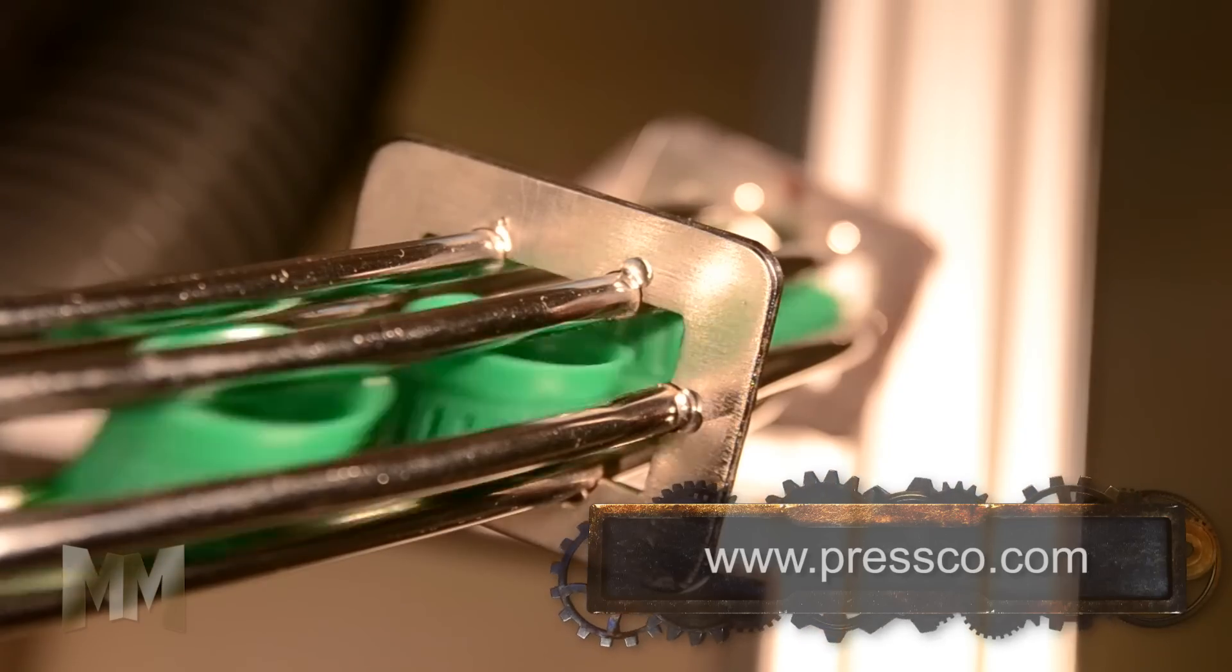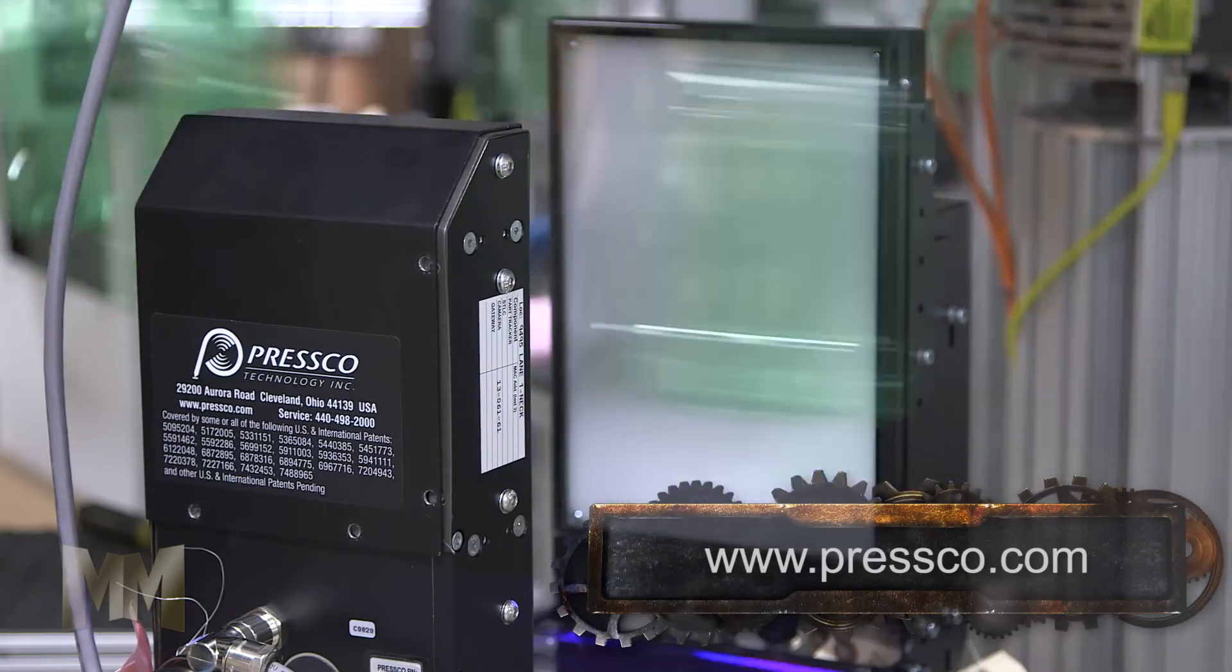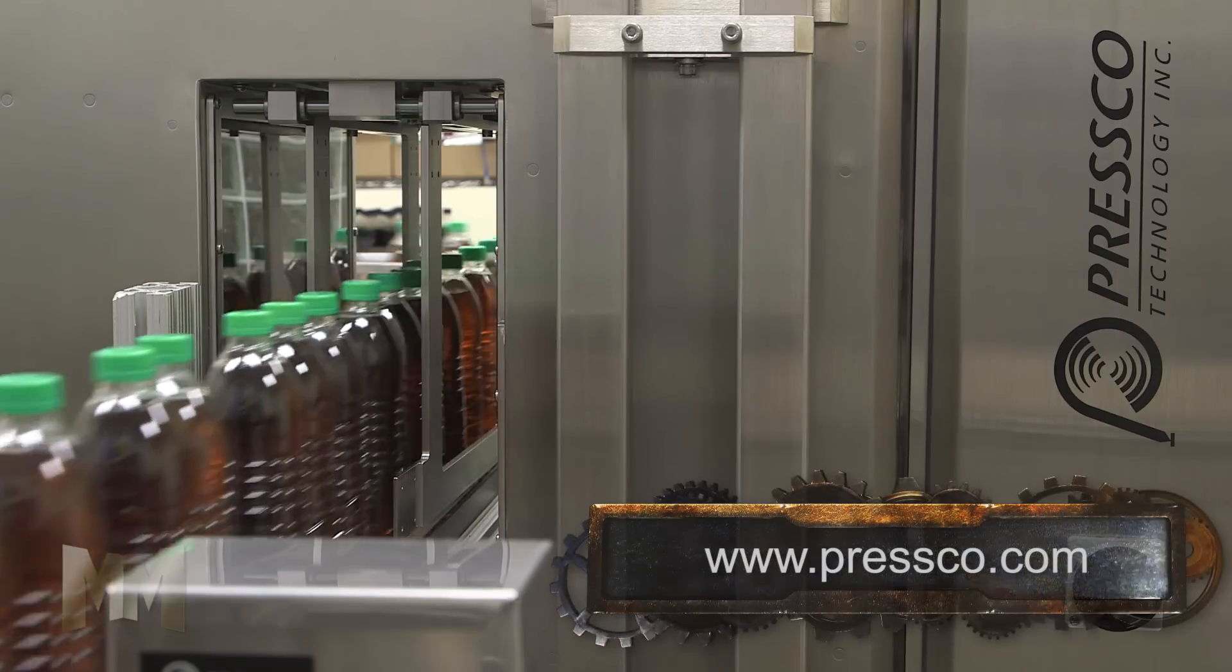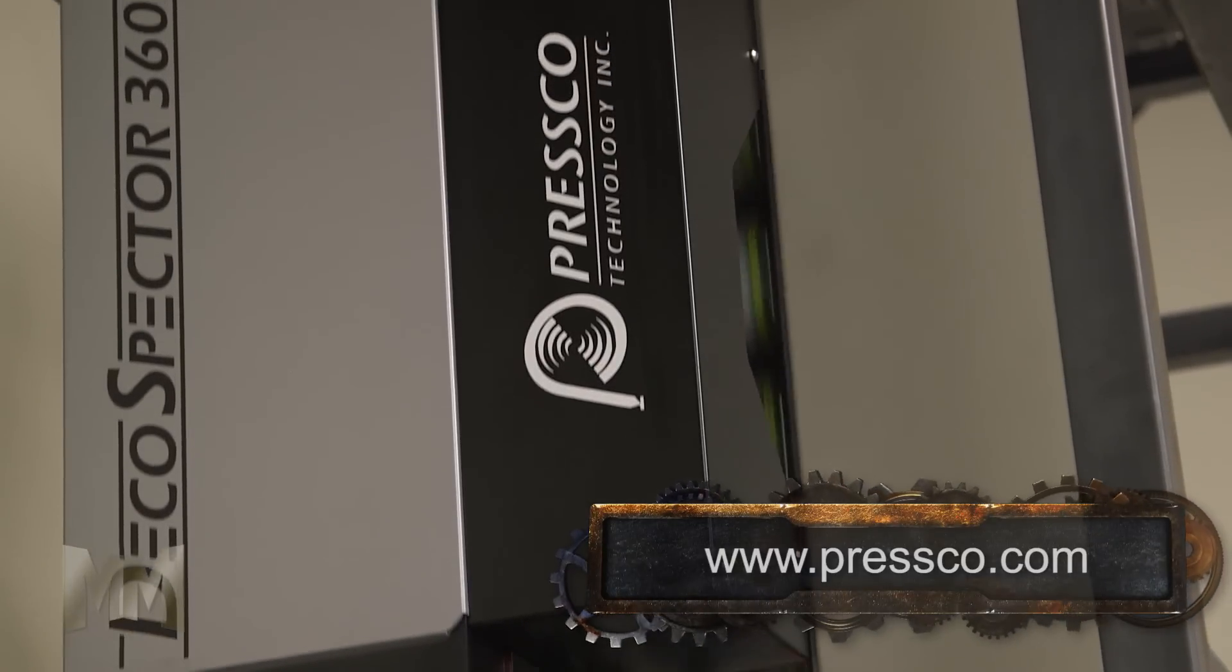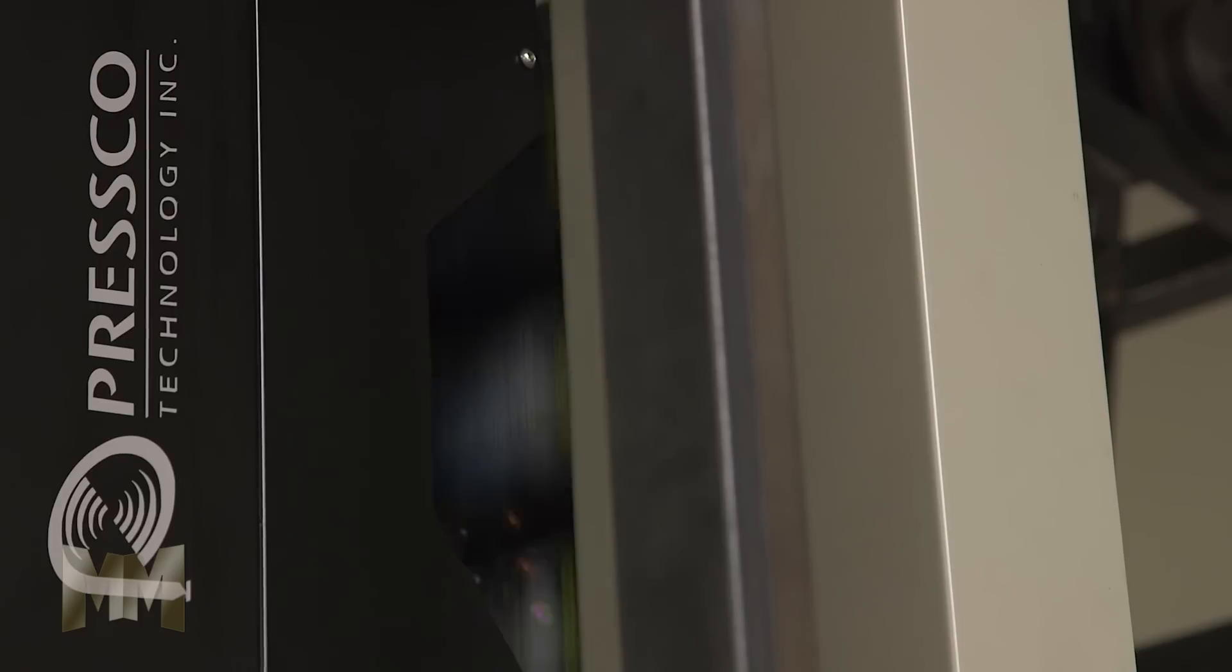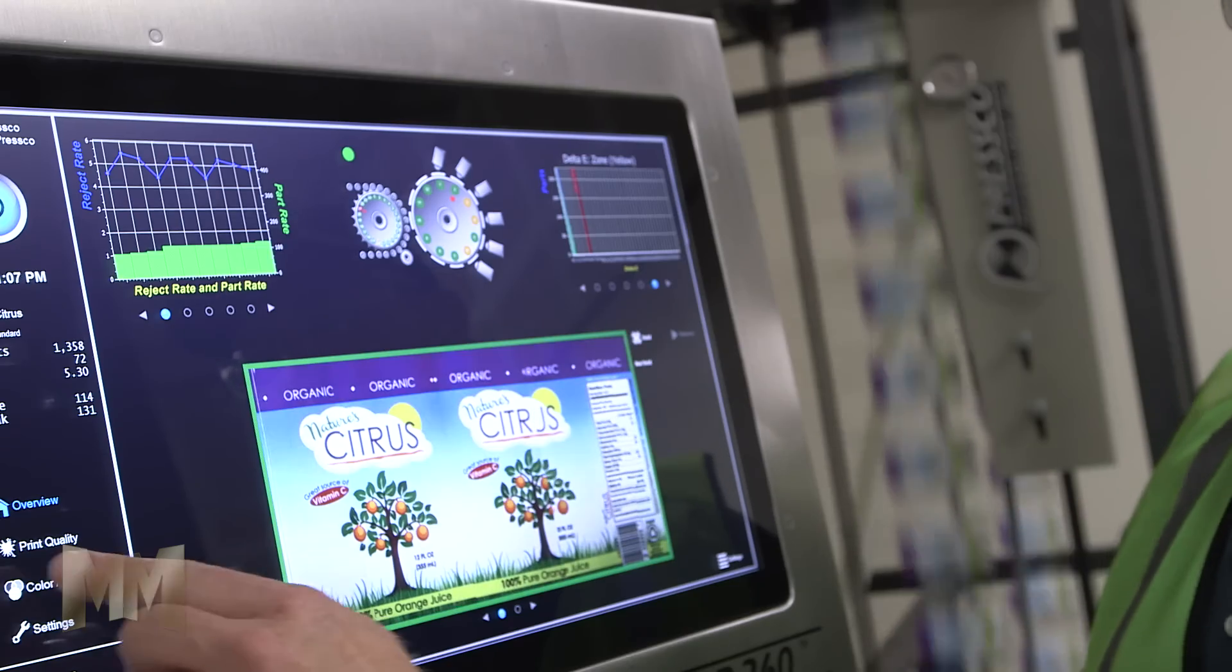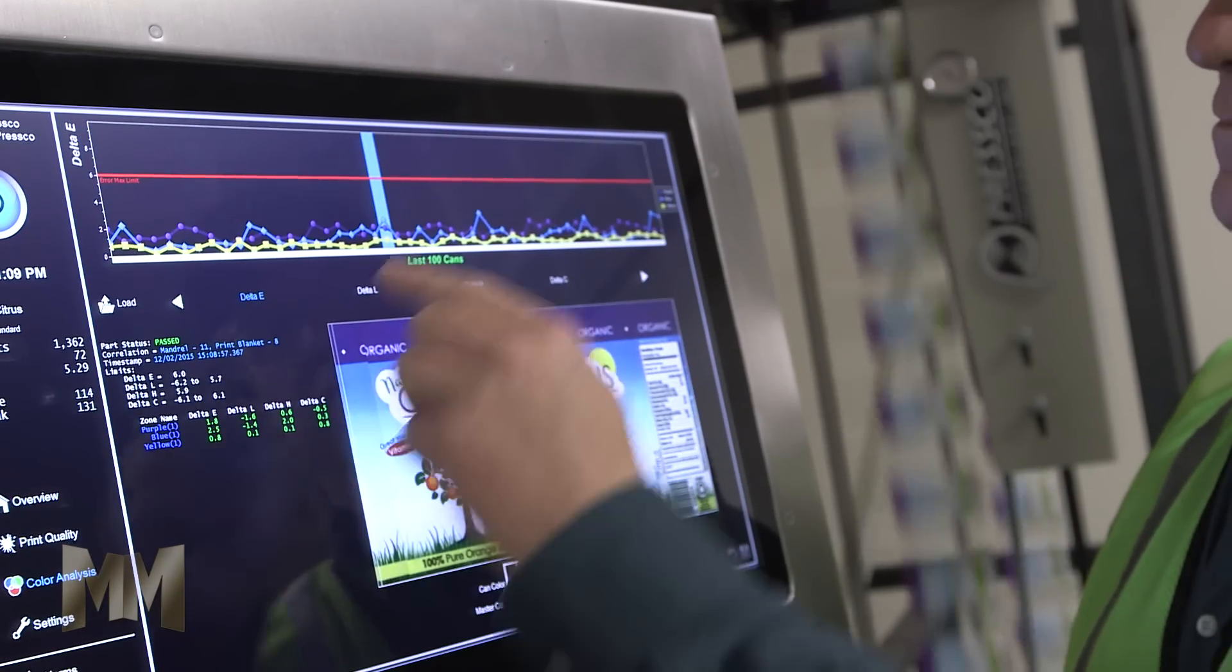For vertically integrated filling companies, Presco offers an end-to-end solution that begins with empty containers and extends to filled, capped, and labeled bottles. The Deco Spectre 360 detects print defects and validates color quality on metal cans, inspecting the entire label to ensure each printed can meets demanding customer expectations.